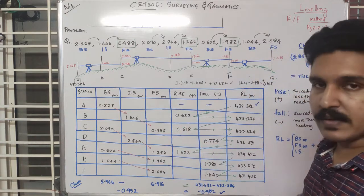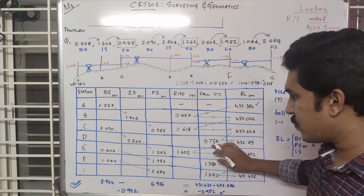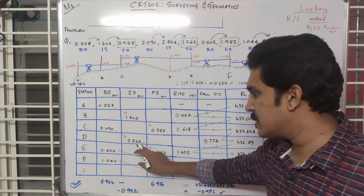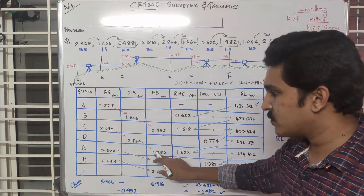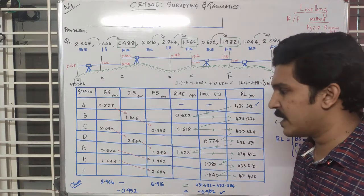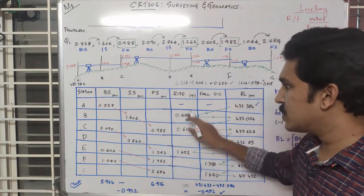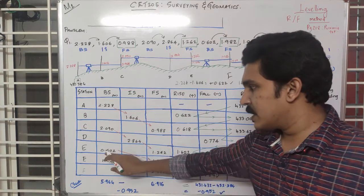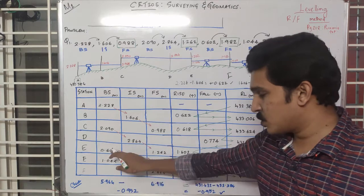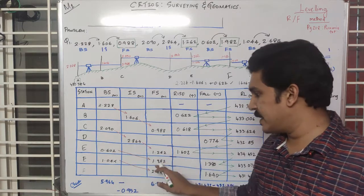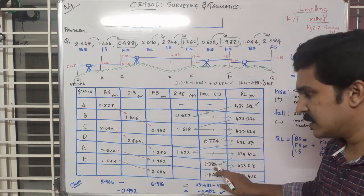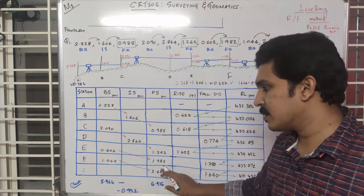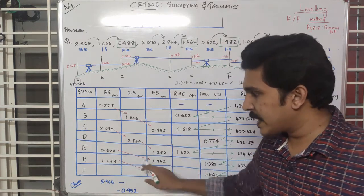The value 2.864 minus 1.262 is a positive value, so that is a rise of 1.602. The next value 2 minus something gives a negative value, which means it is a fall.